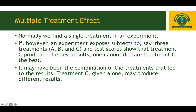Multiple treatment interference may also occur when subjects who have already participated in one study are selected for inclusion in another, theoretically unrelated study. It may have been the combination of treatments that led to the results — if treatments A, B, and C are given, then treatment C alone may produce different results.